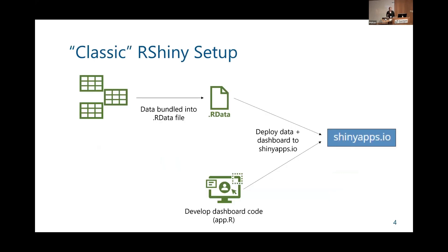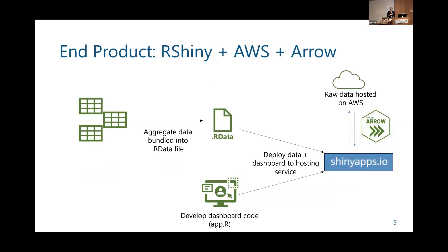I'll reference a classic RShiny setup where all the data used in a dashboard is bundled in an R data file and sent up to Shiny Apps along with your dashboard code. We leveraged this classic setup for aggregated data, but we also included a link to our full data set hosted in AWS, and that link was facilitated by Arrow, where you can query in real time subsets of your data and bring them into the dashboard.